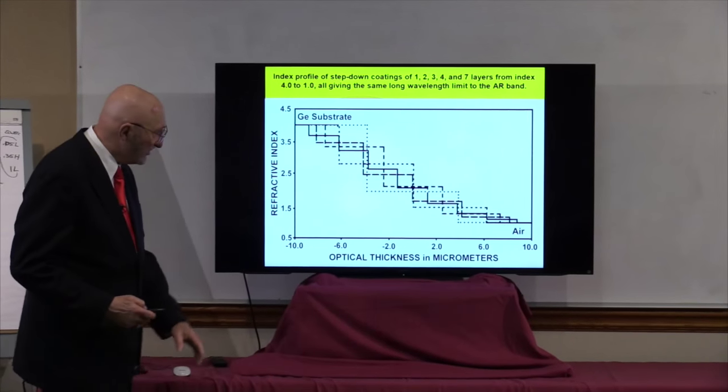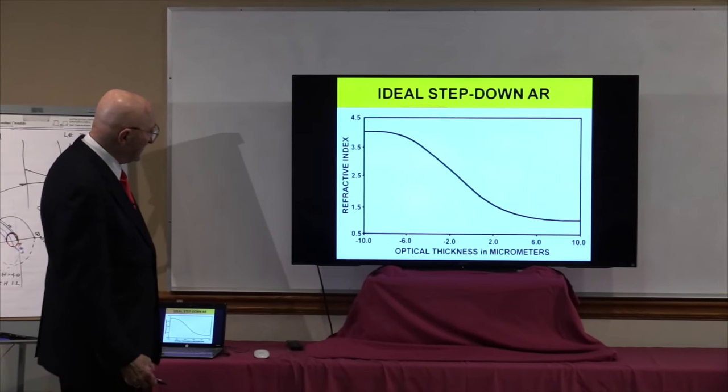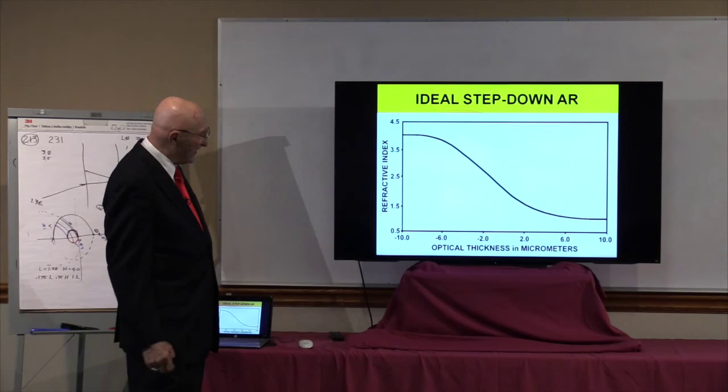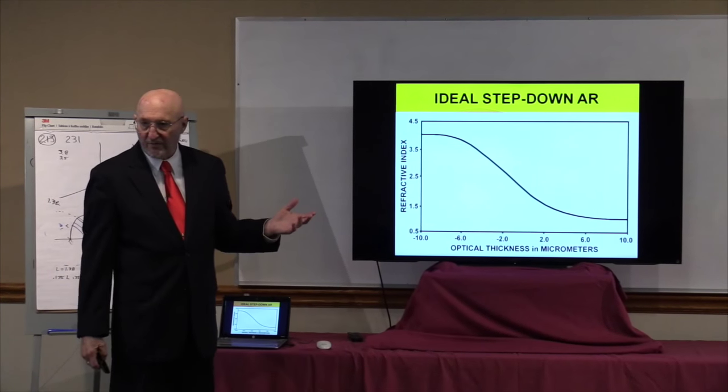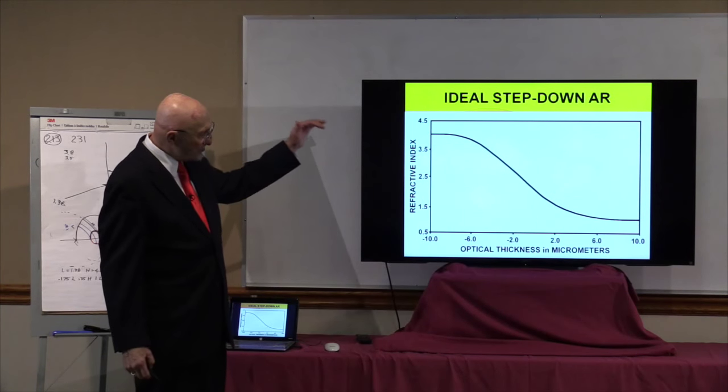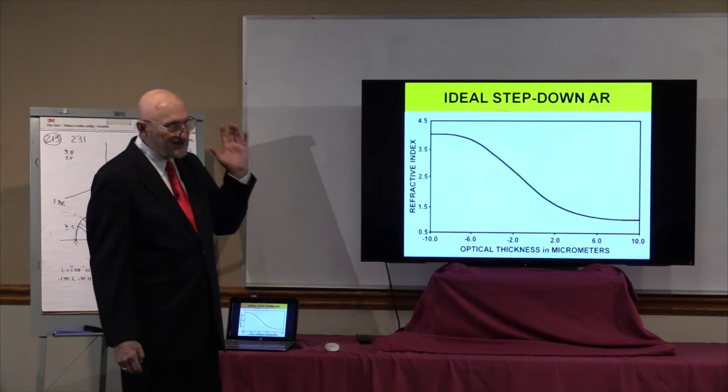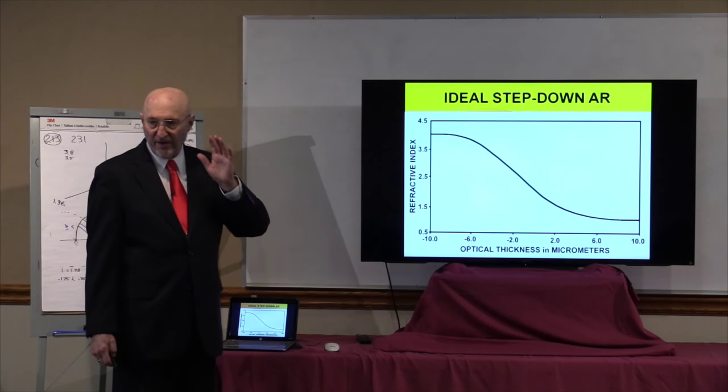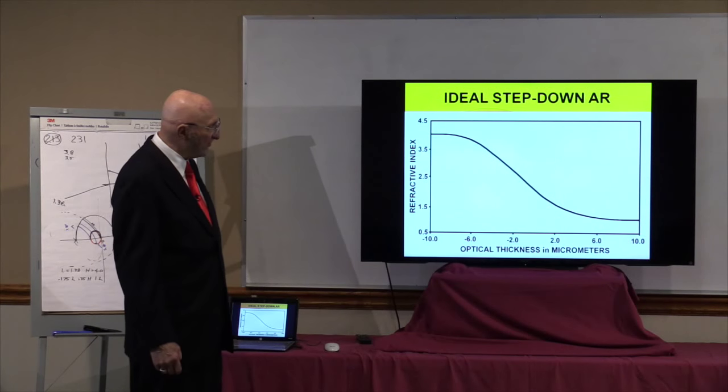And as I look at that curve, ideally, if I went to an infinite number of layers, it would have a shape like this. That is the ideal broadband anti-reflection coating.